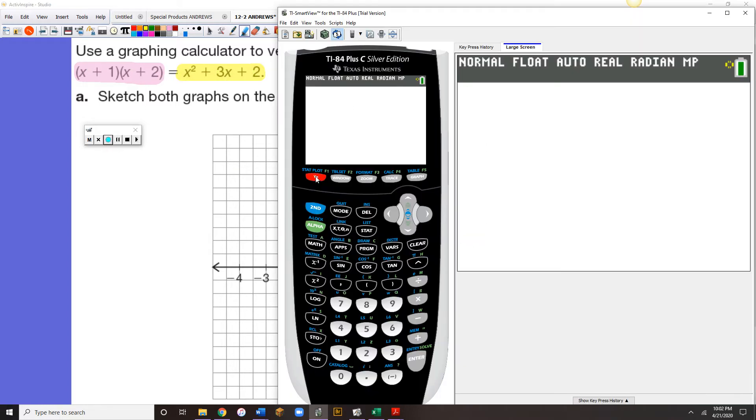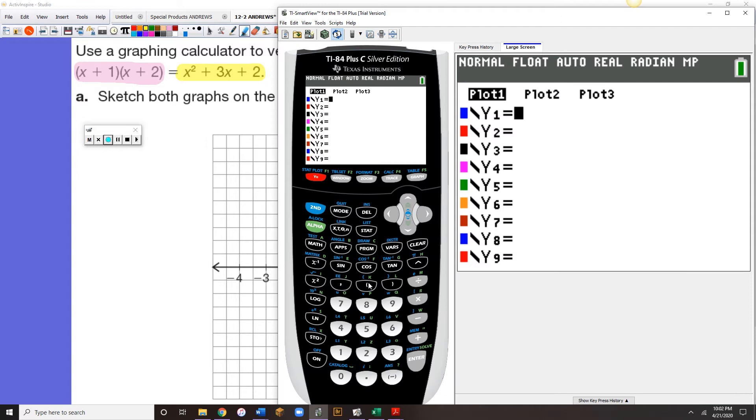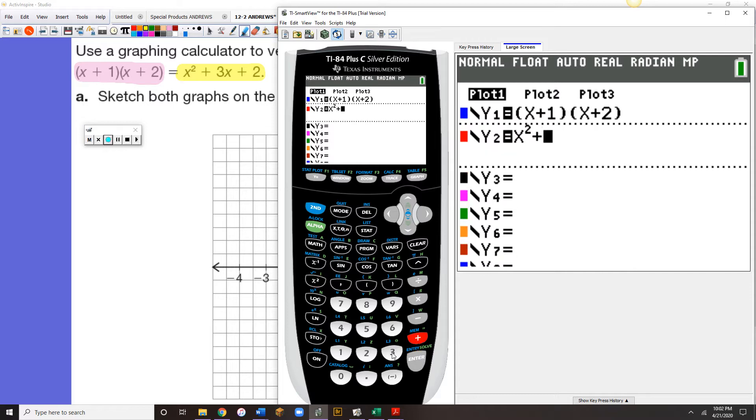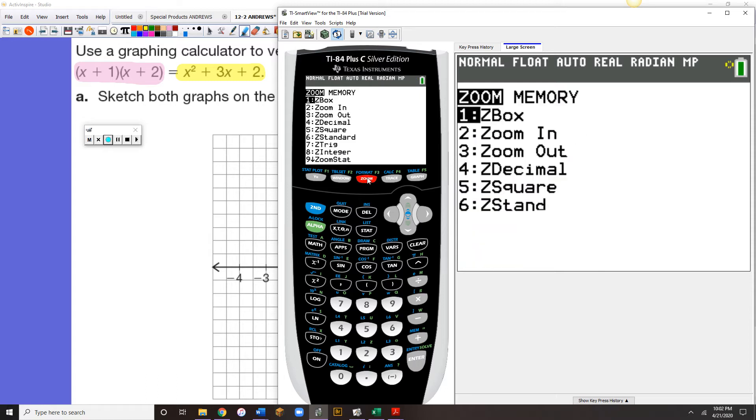So I'm going to go to my y equals, and I'll type in first the factored form. Then I'm going to type in my standard form. Let's see, zoom six.